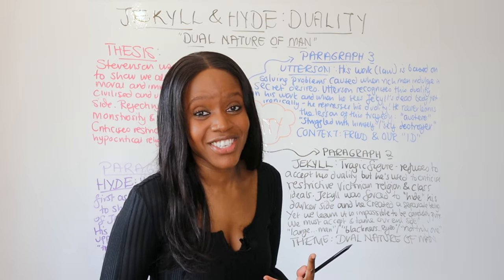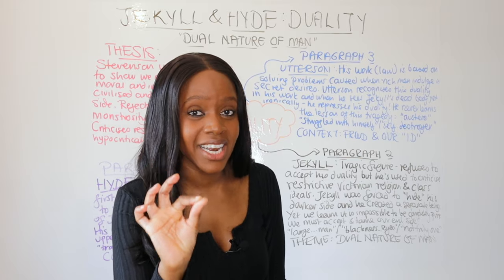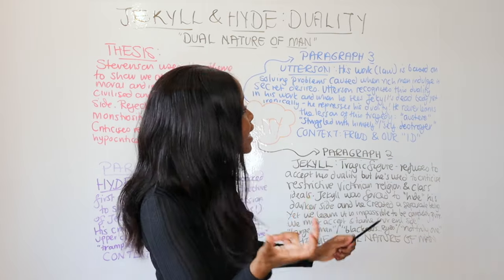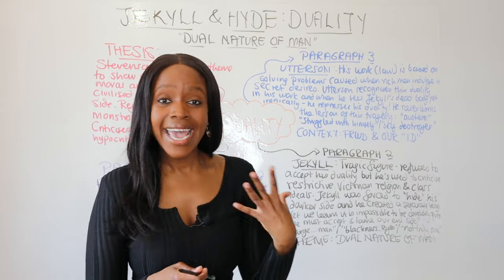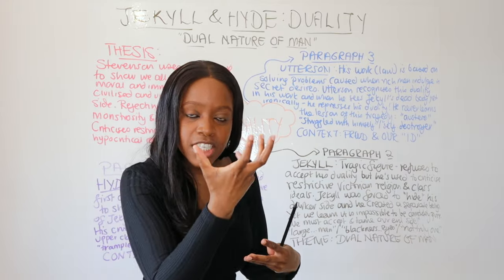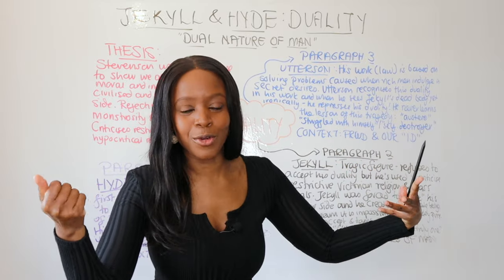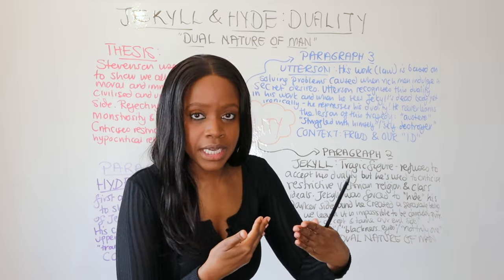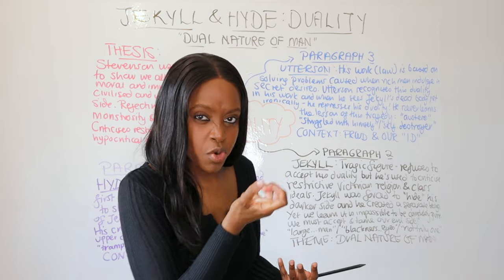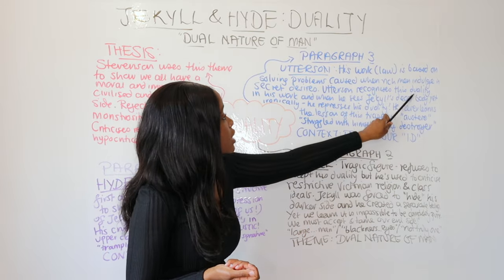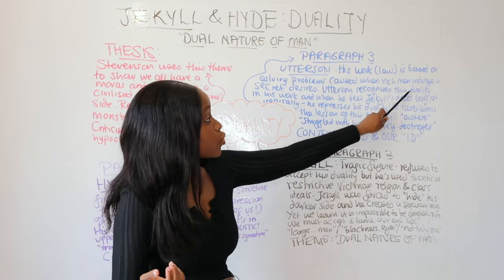Finish your third winning paragraph by talking about Mr Utterson. Utterson is really interesting because as a lawyer he 'was the last reputable acquaintance in the lives of downgoing men.' His profession is based on solving problems caused when rich men indulge in their dark and secret desires. Utterson daily comes up against this duality in his work - when people like Jekyll and Lanyon indulge in their desires, they need someone like Utterson to solve their problems. He also recognizes this duality when he sees Jekyll's dead body after he and Poole break into the lab.